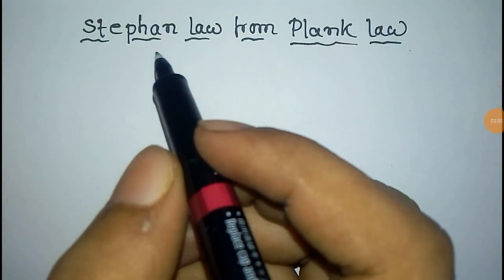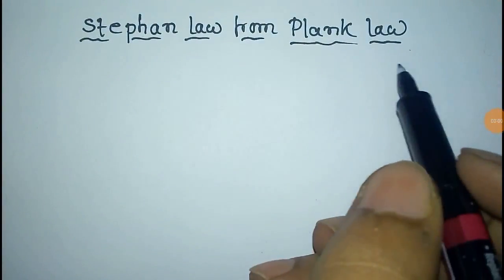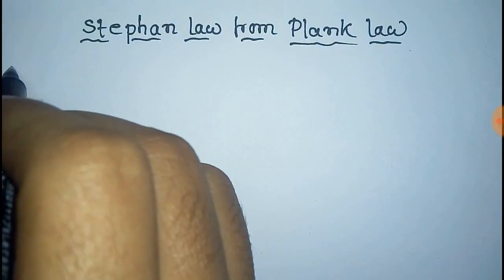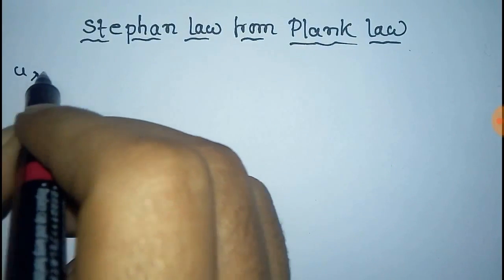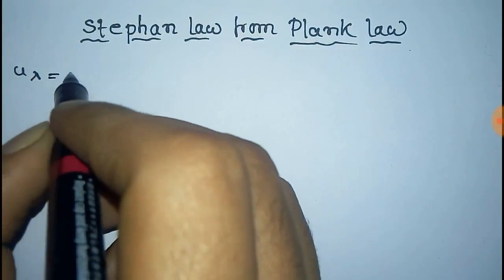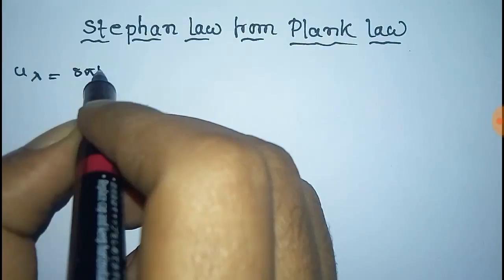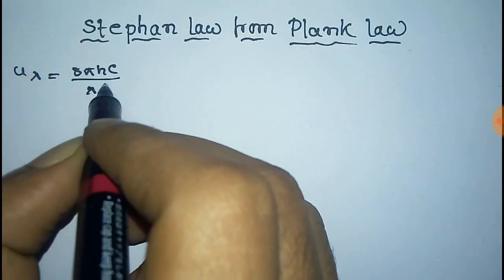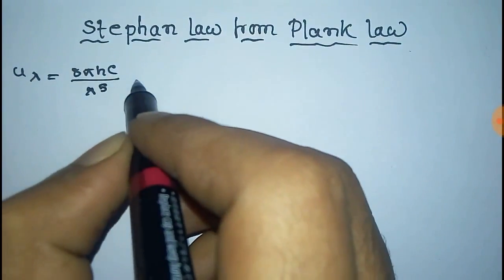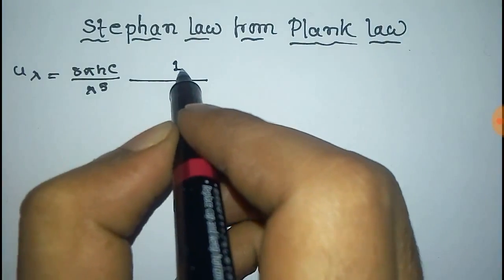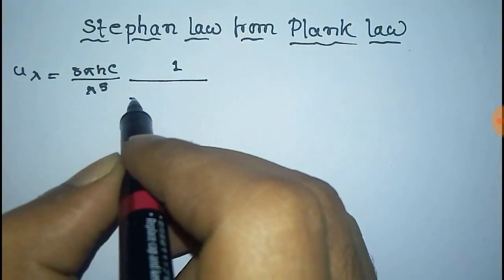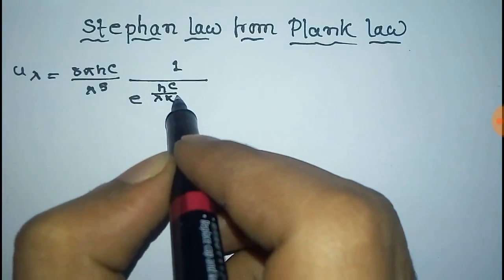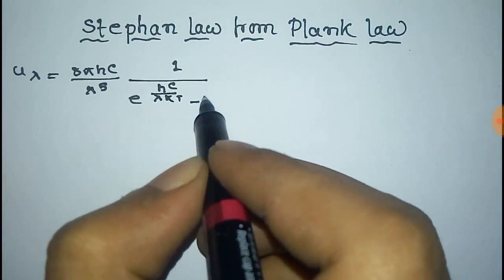We have to prove Stefan's Law from Planck's Law. For this, we take Planck's Law first, that is, the energy density U_λ is equal to (8πhc / λ⁵) into (1 / (e^(hc/λkT) − 1)).